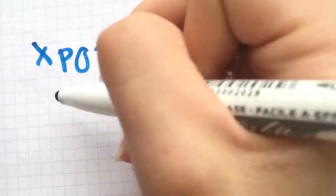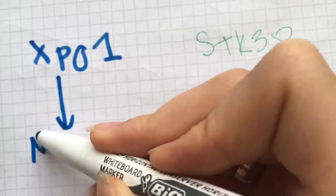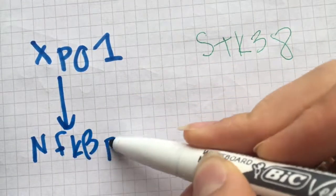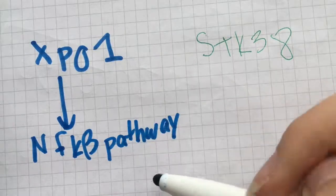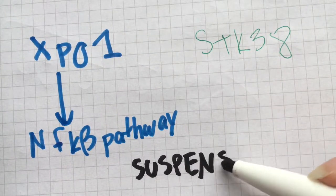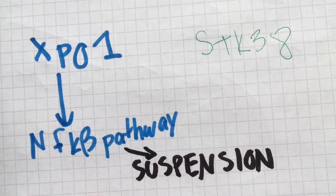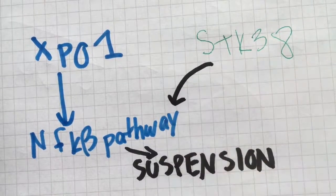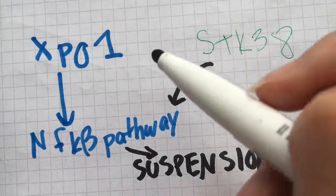We know XPO1 is required for a particular pathway and that this could further be related to why cells survive in suspension, or when they're just floating around in solution. We also know that STK38 is required for this pathway and there's some sort of interaction.